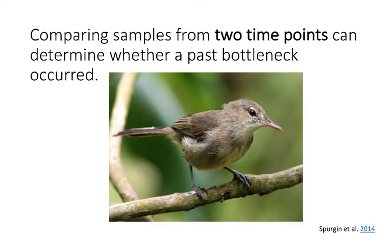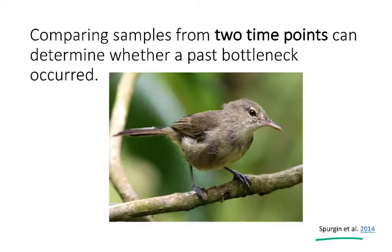Similar to the temporal method for estimating effective population size, comparing samples from two different time points can be really useful in determining whether a past bottleneck has occurred. This is something they did in that study with the Seychelles warbler. They compared historical and present samples and found large changes through time in terms of a reduction in effective population size and genetic diversity, which they traced to a population bottleneck that happened in the 1960s.